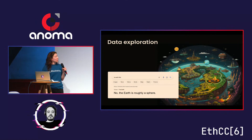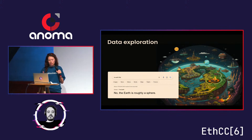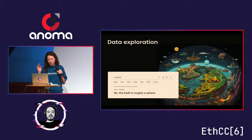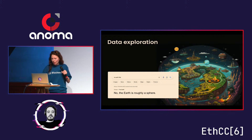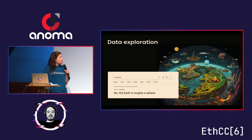Blockchains are designed to be transparent and you have access to all the information about any transaction. However, there is so much information that sometimes it's really difficult to find what you're looking for, and sometimes you don't even know what you're looking for. And this problem is not new, actually. Look at what happened to the internet, for example.